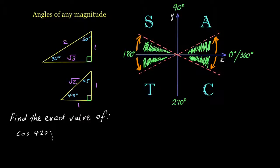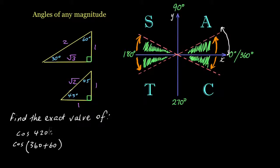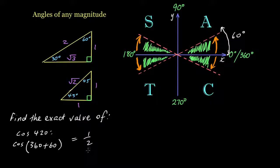Find the exact value of cos 420 degrees. In this case we've gone all the way around once — one full revolution of 360 degrees — and gone an additional 60 degrees past. So cos 420 is cos(360 + 60). We ignore the first 360 and we're back in the first quadrant at 60 degrees. Using 60 degrees, cos is adjacent over hypotenuse giving 1 over 2. We're in the A quadrant so everything is positive: cos 420 equals 1 over 2, or 0.5.